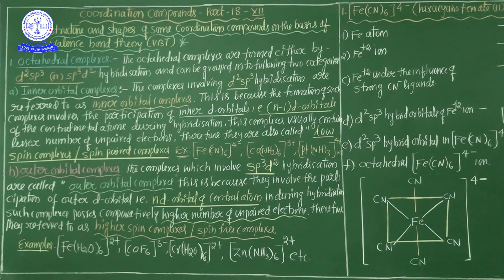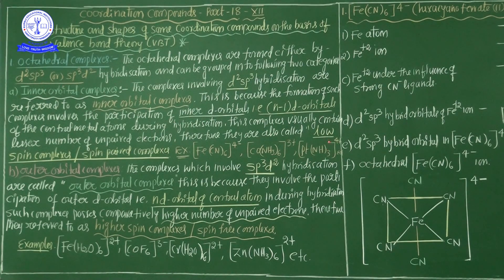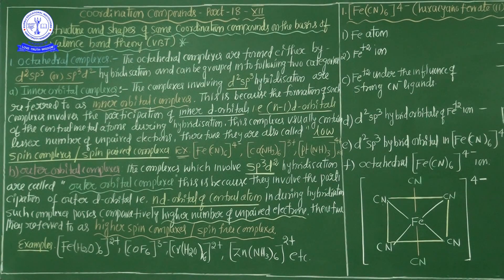If a complex is an inner orbital complex — meaning it involves d²sp³ hybridization — it is a low spin or spin-paired complex. The (n-1)D orbitals are involved. This is the first part regarding octahedral complexes.